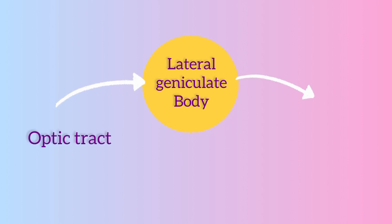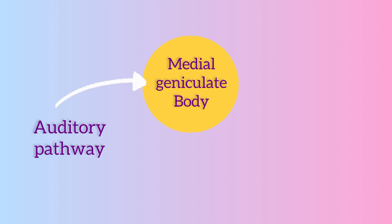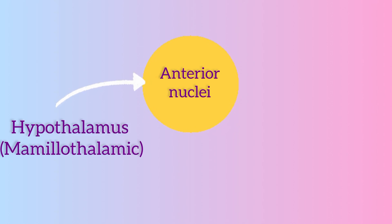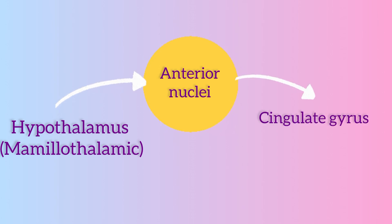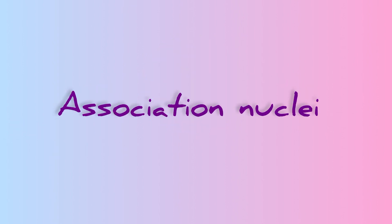The lateral geniculate body receives input from the optic tract and projects to the visual cortex. The medial geniculate body receives input from the auditory pathway and projects to the auditory cortex. The anterior nucleus receives input from the hypothalamus via the mammillothalamic tract and relays information to the cingulate gyrus.